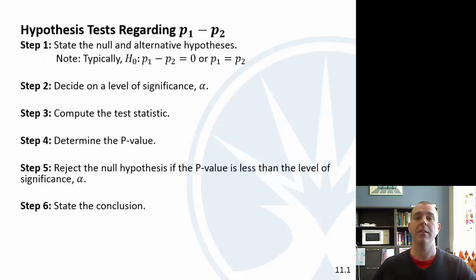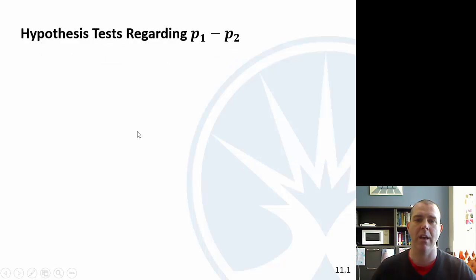Then we can have a hypothesis test, and you know the drill. We have a null hypothesis. Typically here the null hypothesis is that the proportions are the same, so that the difference is zero. And then we've got all the same steps. The only thing different is going to be the test statistic.